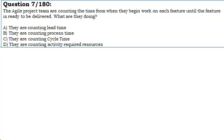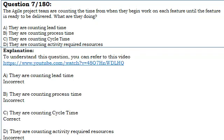Let us see the answer. To understand this question, you can refer to this video. A. They are counting lead time. Incorrect. B. They are counting process time. Incorrect. C. They are counting cycle time. Correct. D. They are counting activity required resources. Incorrect.